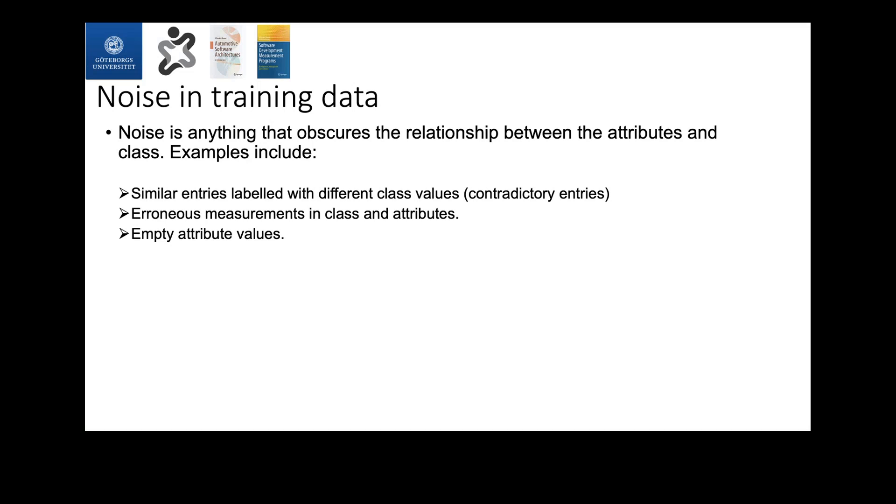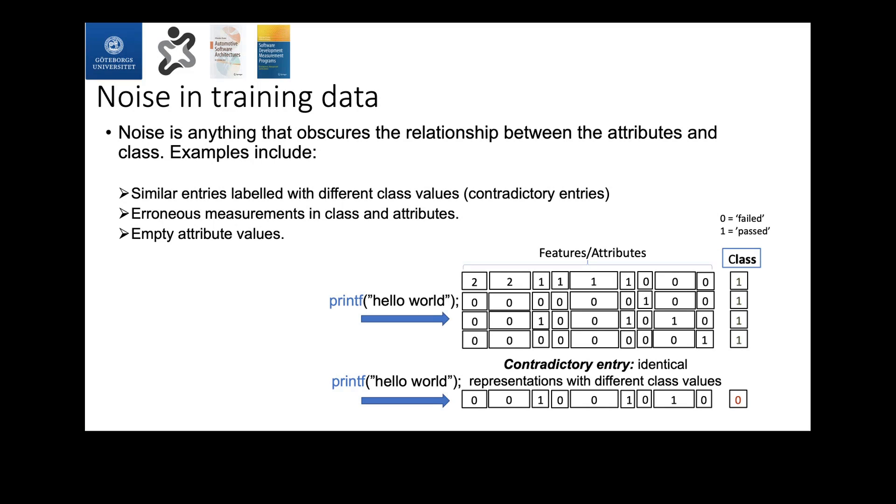When I talk about noise, I refer to anything in the data that can obscure the classification performance. Some examples can be having similar entries in the data set that come with different class values, using measurement tools that produce erroneous measurements in the attributes in the class, or even having empty values. Let's take a closer look at the first example. Suppose we have two printf statements that are exactly the same, and then we feed those into the feature extraction algorithm. The representation will look pretty similar, but they have different class values. We refer to those instances in the data set as contradictory, because they're exactly identical, but they have different class labels. We calculate the ratio of their occurrences to the total number of entries we have, and we refer to that ratio as class noise ratio.